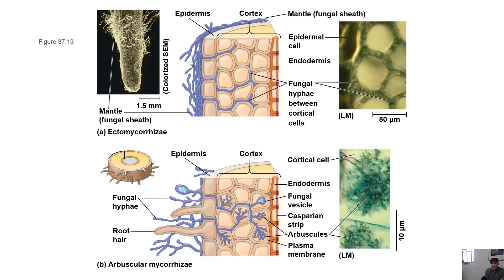Most plants that live on land have fungi associated with their roots. In fact, some of the oldest fossil plants we know of have fungi associated with them. So we think that fungi made life on land possible for plants — it allowed them to have the ability to absorb enough stuff from the soil to survive. So mycorrhizae are really important, and this is a symbiotic relationship between the two species.